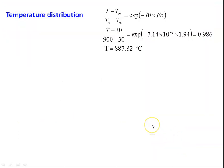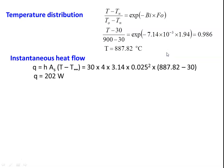We calculate temperature from the distribution equation: (T − T∞) / (T₀ − T∞) = exp(−Bi × Fo). So (T − 30) / (900 − 30) = exp(−7.14 × 10⁻³ × 1.94) = 0.986, giving temperature equal to 887.82 degree Celsius. The instantaneous heat flow: Q equals H into A_s into (T − T∞). H equals 30, surface area of the sphere is 4πR², so 4 × 3.14 × (0.025)² into (887.82 − 30). The instantaneous heat flow equals 202 watts.